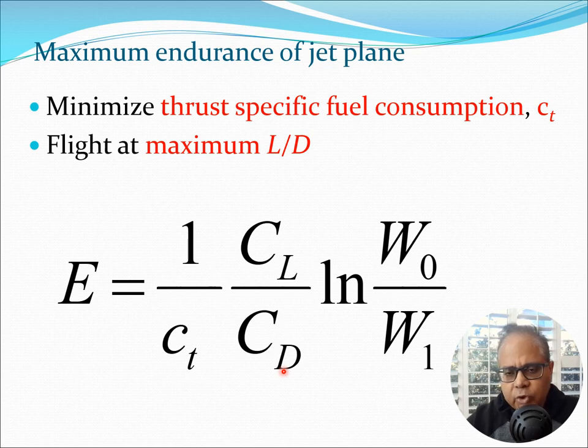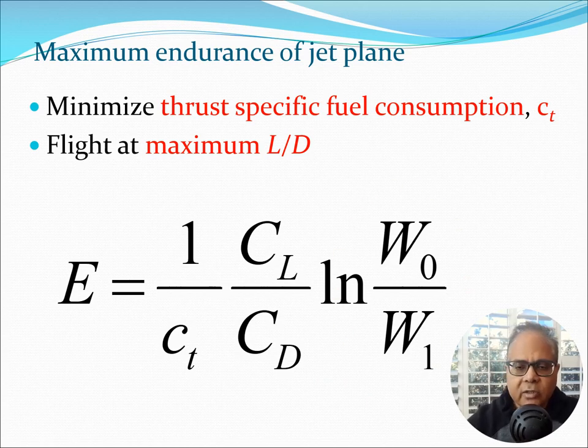Now we try to always look at the math model and see what we can extract out of the model. This is one of the fundamentals in any kind of engineering research or study. So we look at this and let's say how we could maximize E. We could minimize CT which would mean that I minimize the thrust specific fuel consumption. That is a driver of the engine technology. I would also want to fly at maximum L by D or maximum CL by CD. That is something which is coming out of the aerodynamic design, and then the weight component I am going to look at in the next slide.